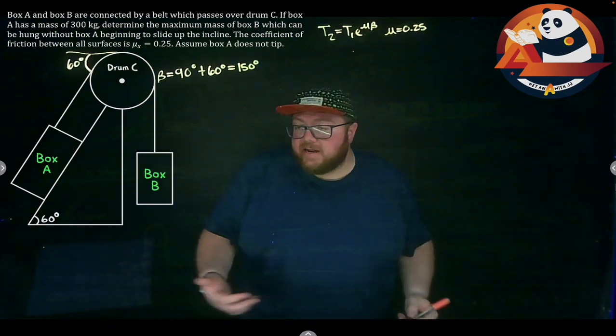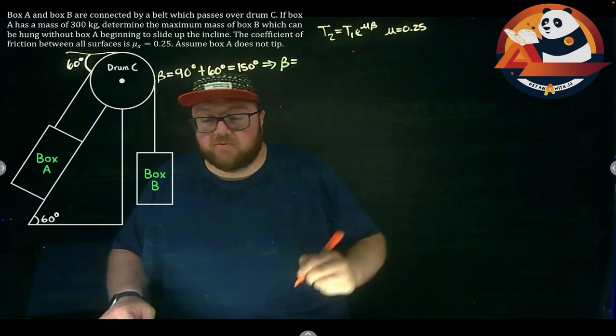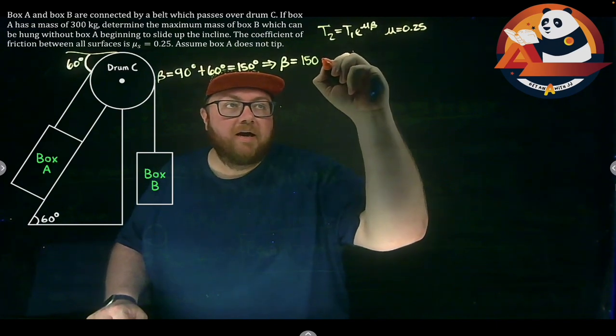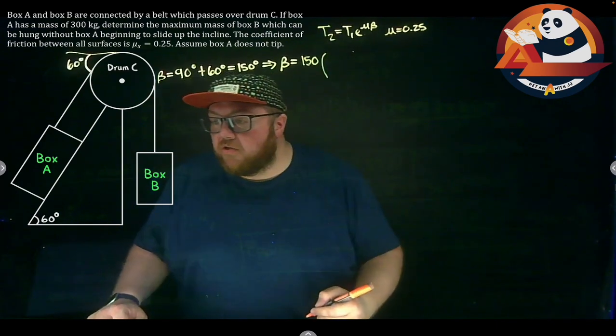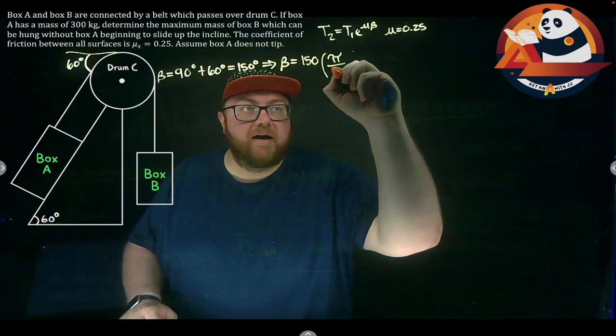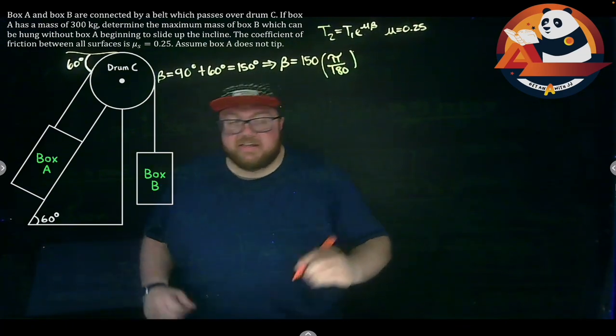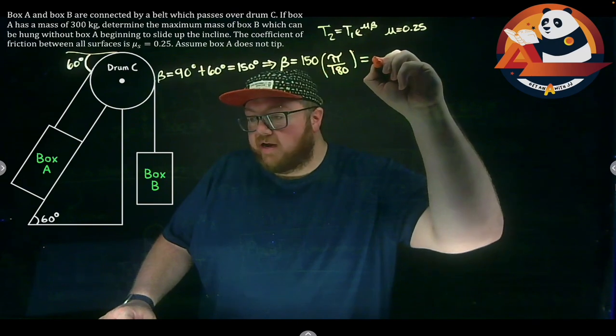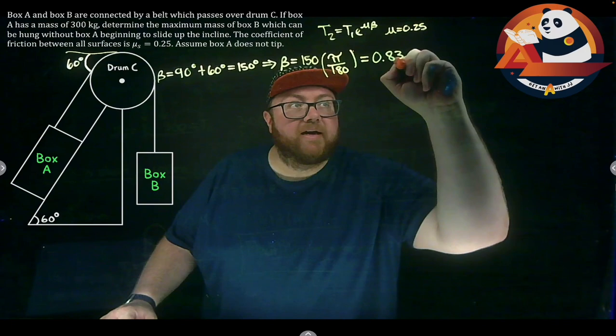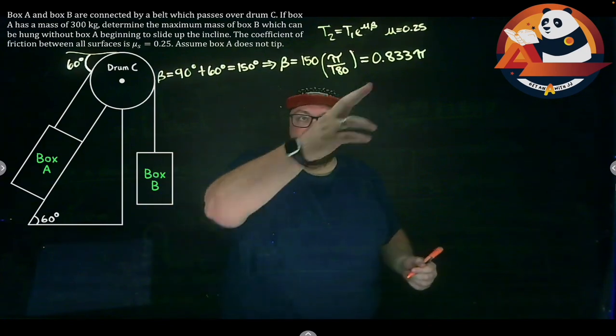If I convert that into radians, I would say this would get me the beta in radians, which is what I use in my equation, is my degrees, 150, times, well I know that there are pi radians for every 180 degrees, pi over 180. My degrees would cancel, I'd be left with radians coming out here, or this is 0.833 pi, 0.833 pi, or 5 pi over 6 if we want a fraction there. But let's go with the decimal.